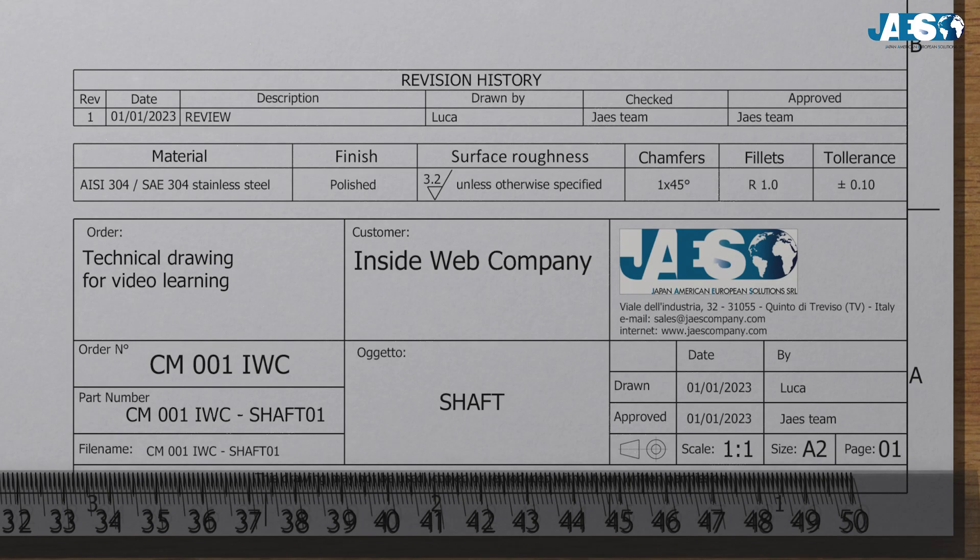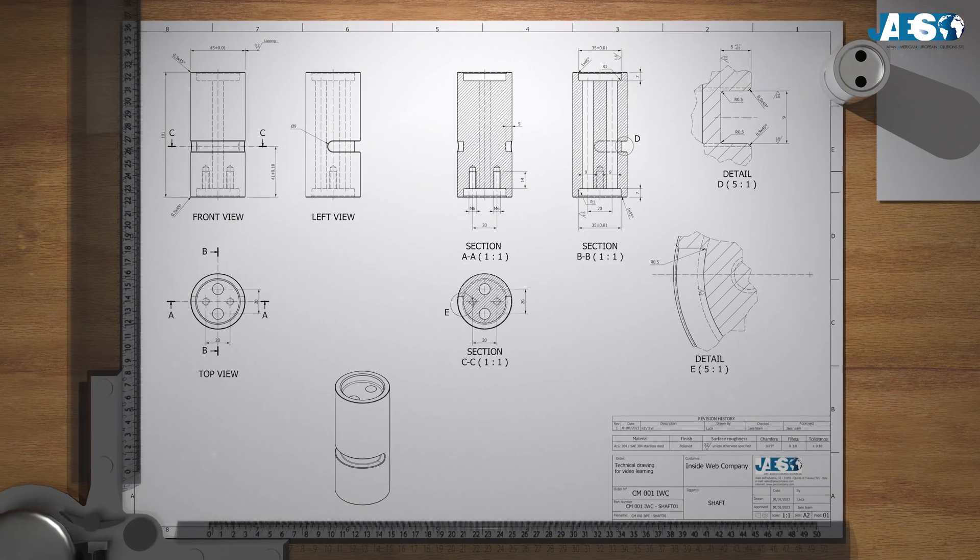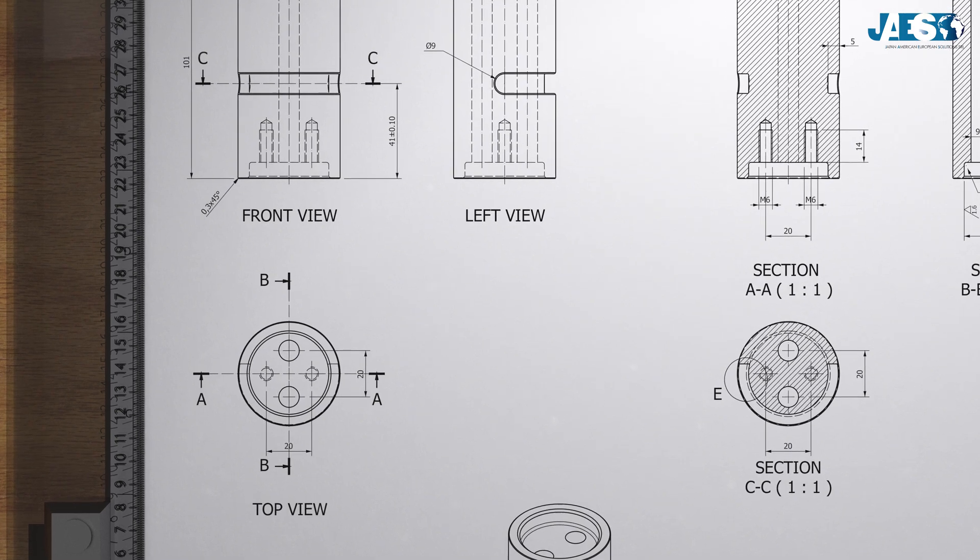Lastly, there may be additional lines which specify finish, surface roughness, or other features of the part that cannot be drawn, such as the material, which in this case, as the acronyms of the AISI and SAE designation systems say, is common 304 stainless steel. Now let's move on to the actual drawing.